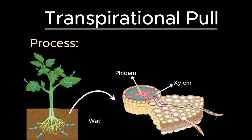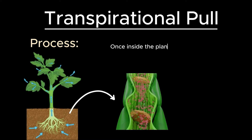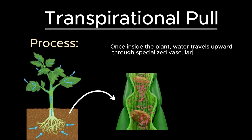Water is absorbed by plant roots from the soil. This water contains dissolved minerals essential for plant growth. Once inside the plant, water travels upward through specialized vascular tissues called xylem vessels.